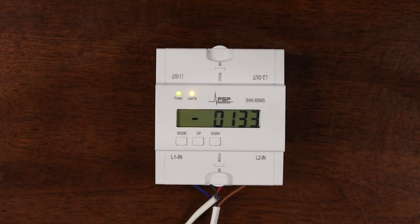Here I have the SAK60MS connected to a CT simulator to demonstrate its operation. I have the high current set point set at 160 amps and the low current set point set at 115 amps.